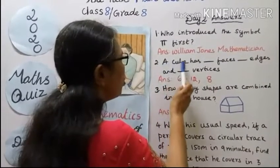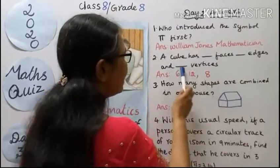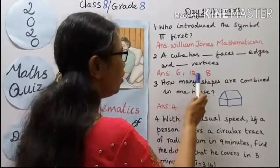Second question, a cube has dash faces, dash edges, and dash vertices. Answer: 6, 12, 8.